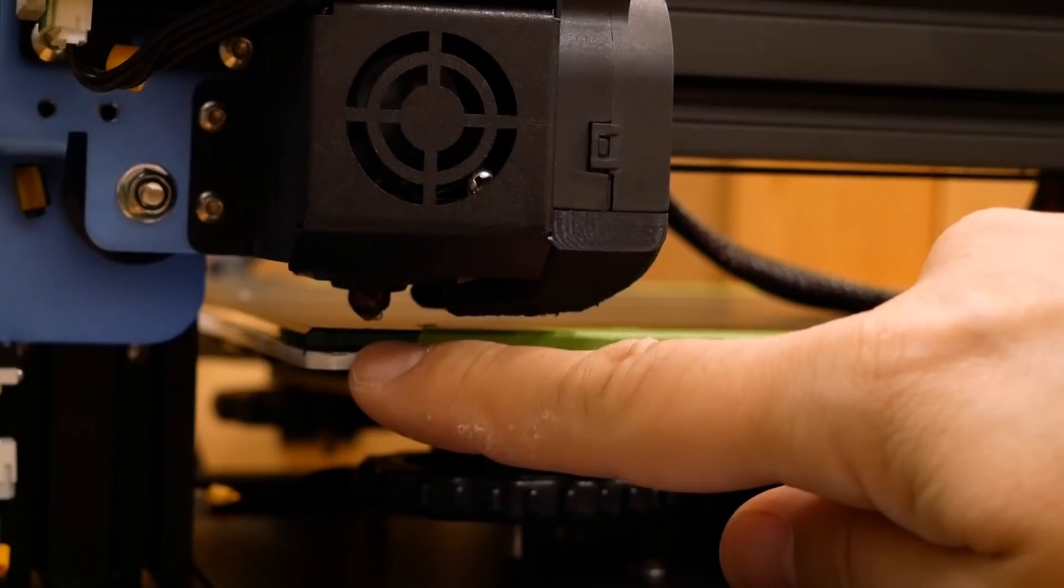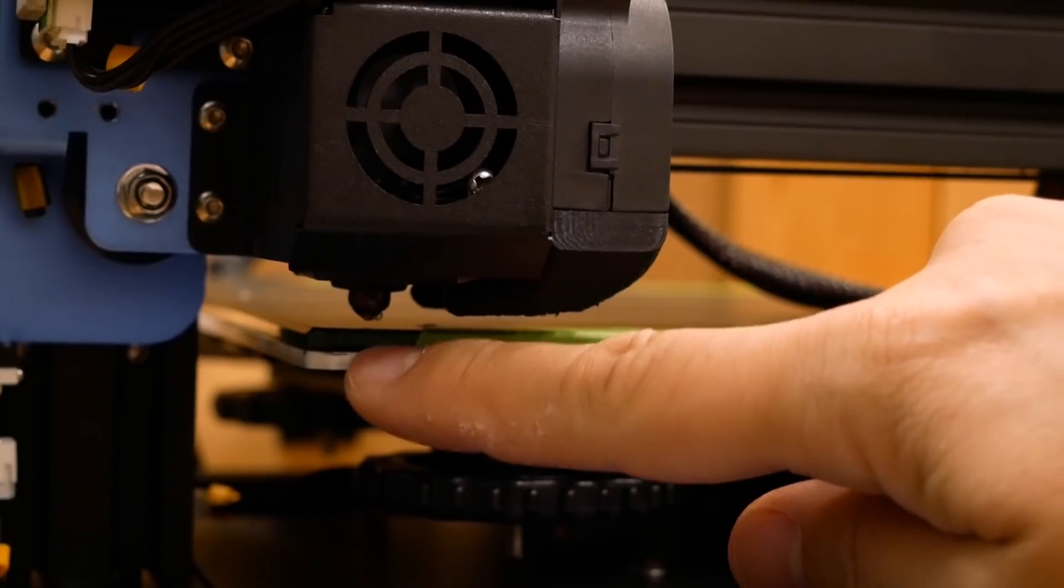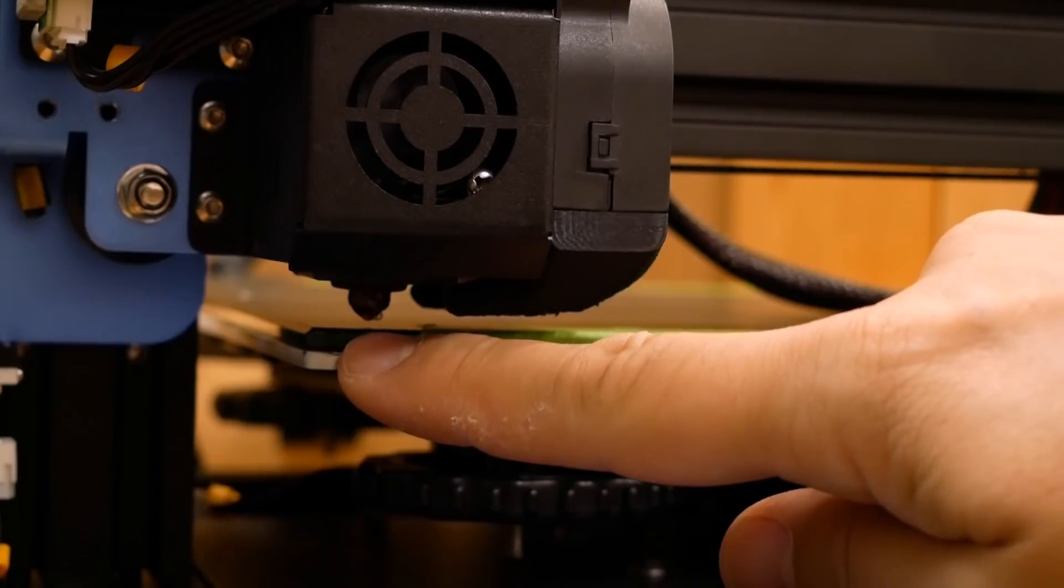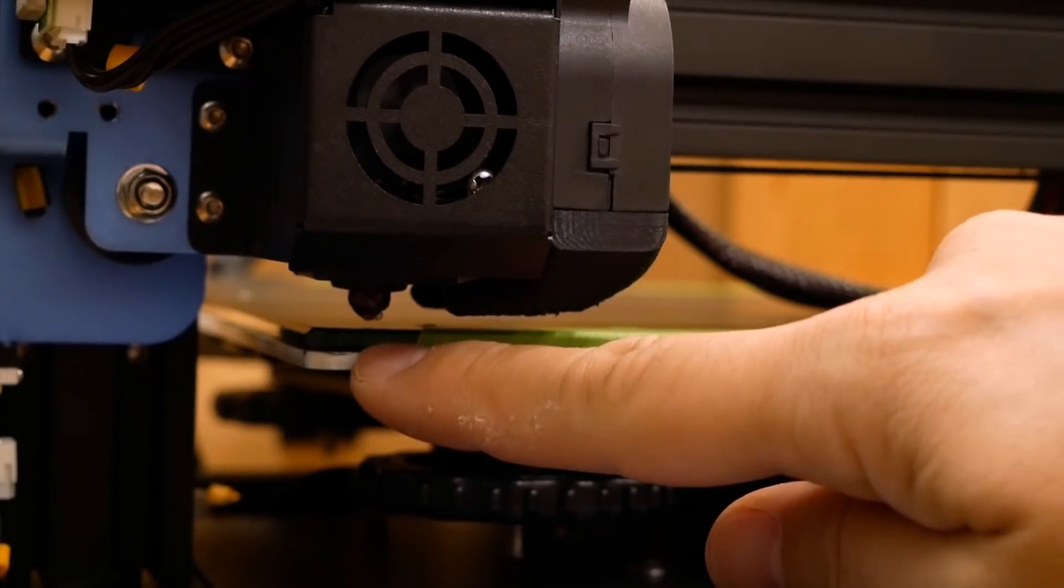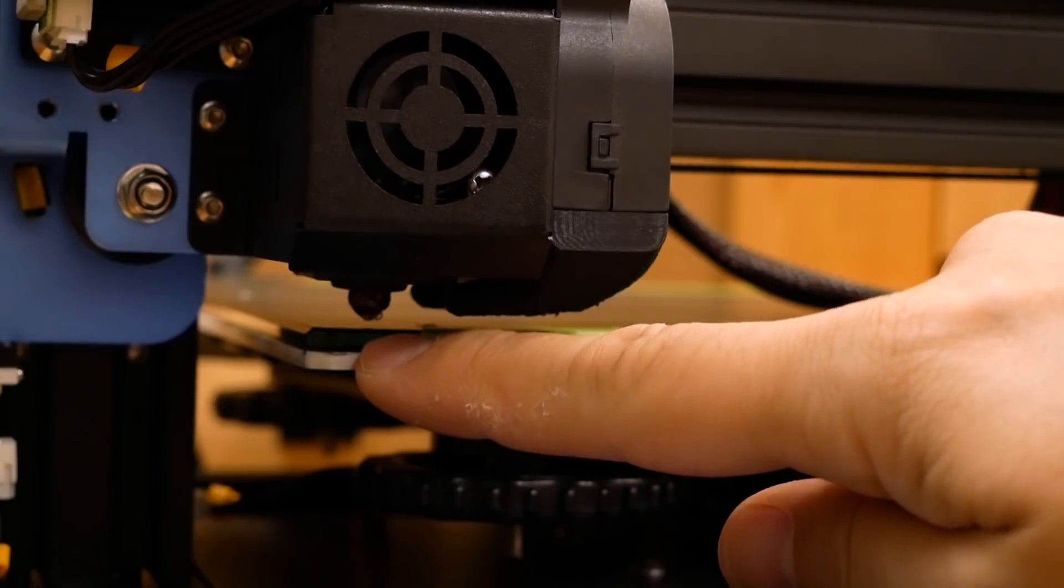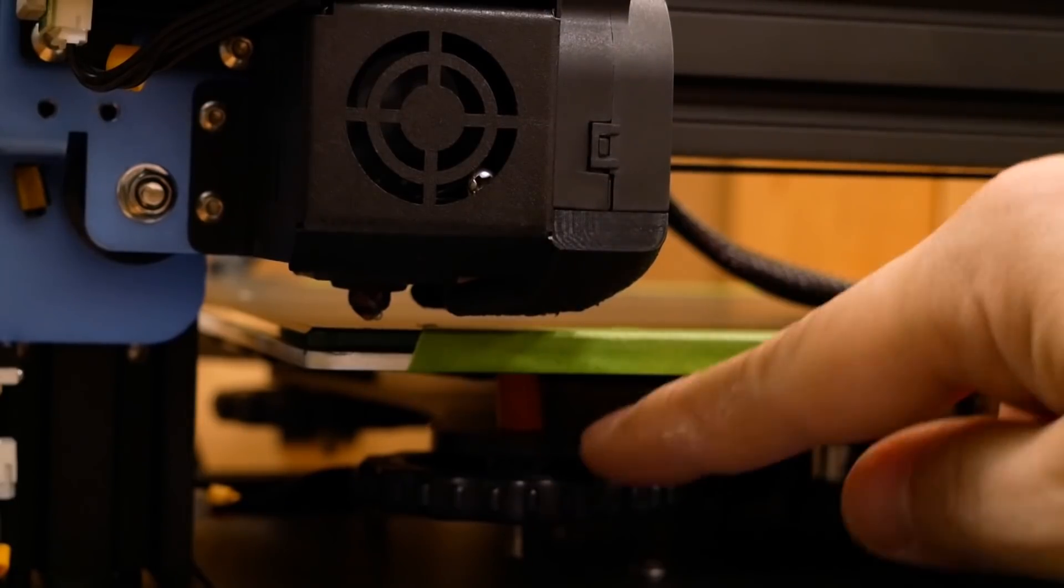I found that I got the best results by using a single sheet of paper folded in half. A lot of guides will say to use a single sheet of paper only, but I found that put the nozzle too close to the bed, so that's where I got the best results.